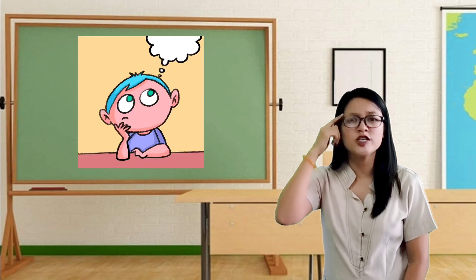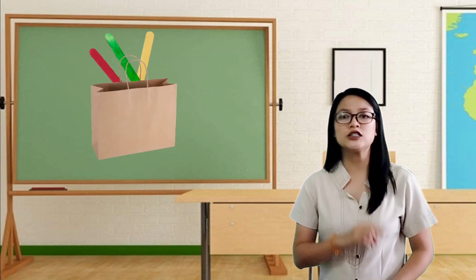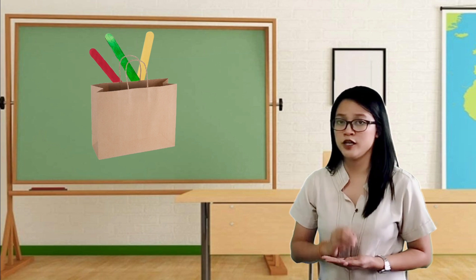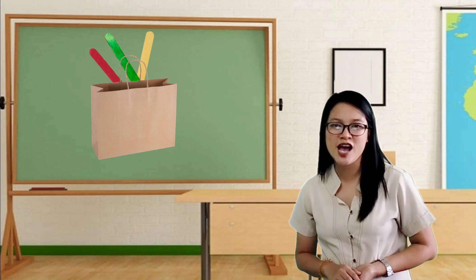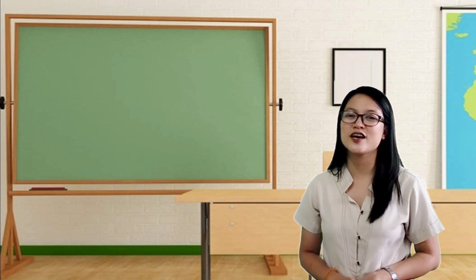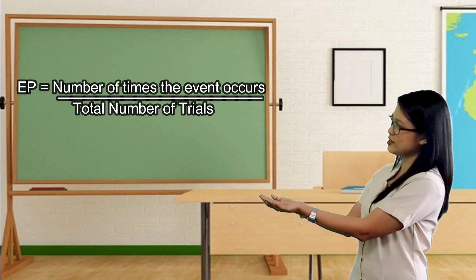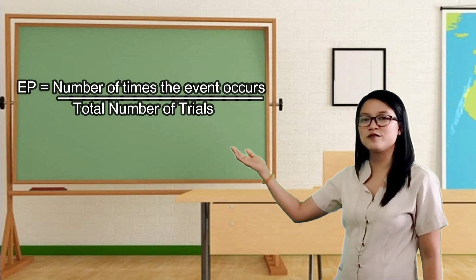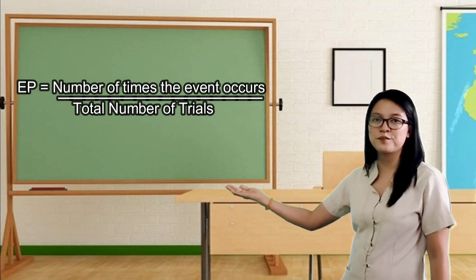The next step in solving routine and non-routine problems is to make a plan. What strategy can we use to solve the problem? Since we conducted the experiment of picking a popsicle stick from the bag and recorded the result, we are now going to apply the formula in getting the probability. Experimental probability is equal to the number of times the event occurs over the total number of trials.